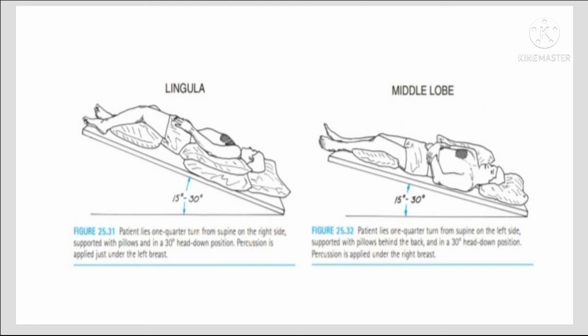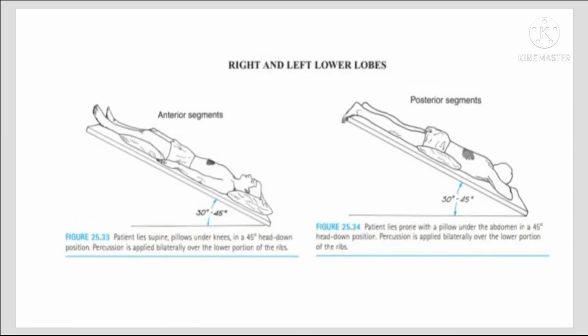Middle lobe — right side: patient lies one quarter turn from supine on the left side, supported with pillows behind the back; pillows are kept under the head, on the side, and under the knee; patient lies in 30 degree head-down position; percussion is applied under the right breast. Right and left lower lobes — anterior segment: patient lies supine with pillow under the head and knee; patient is in 45 degree head-down position; percussion is applied bilaterally over the lower portion of the ribs.